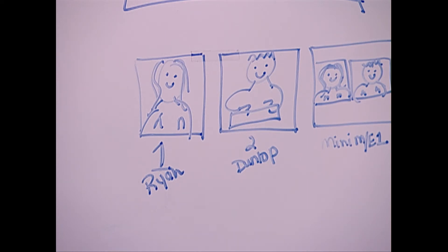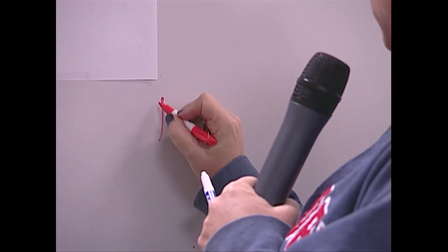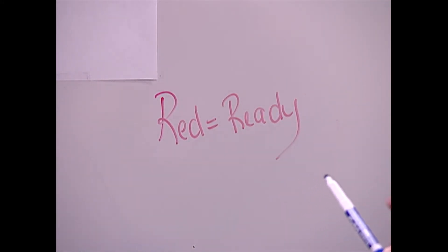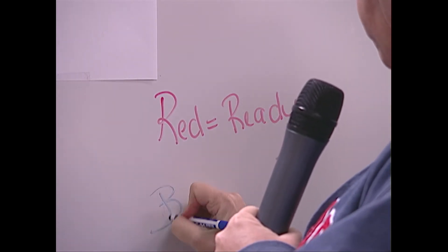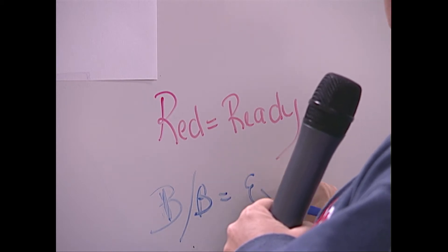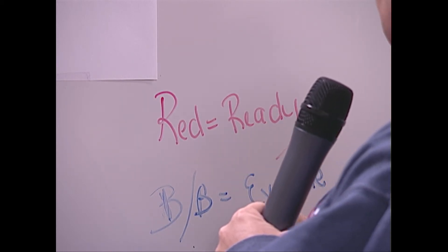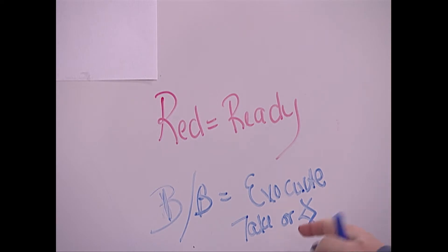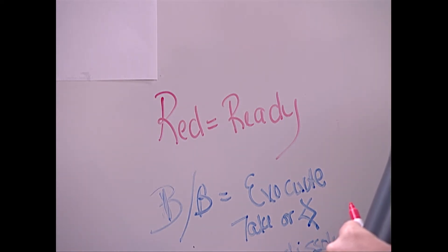I know where my talent is going to be sitting and what camera they are going to be facing, so now I can start marking my script. Anything I write in red means ready. Anything I write in blue or black means execute — that could be a take or dissolve. I use codes so I don't have to spell everything out. The dissolve symbol comes from a crescendo or decrescendo, and we can also use these for fade up or down.